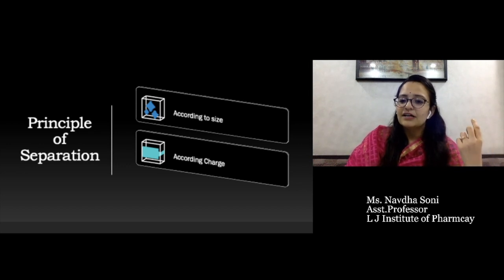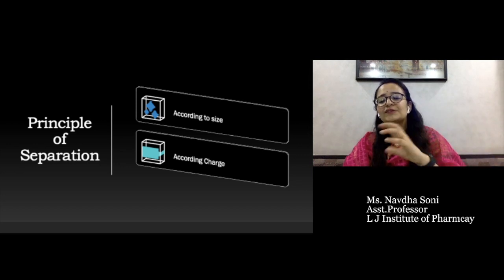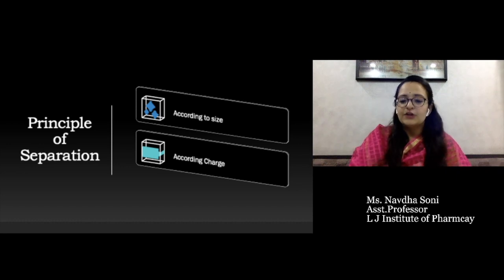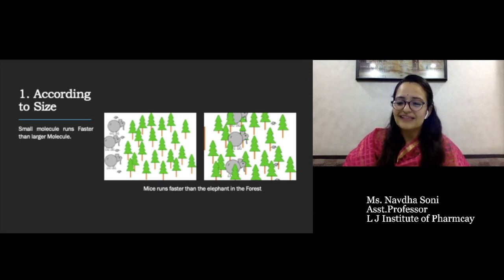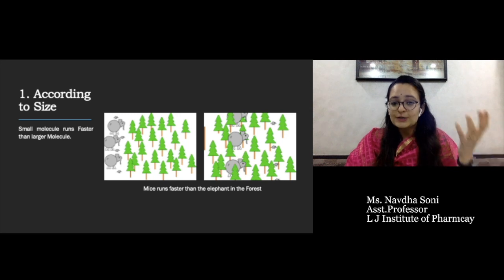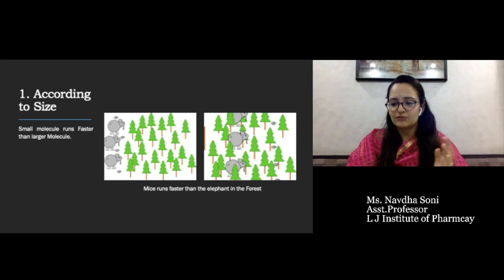Separation based on size means smaller molecules run faster than larger molecules. Let's take the example of mice and an elephant. Here you can see the example of mice and elephant in the forest — who will run faster? Obviously, mice run faster than the elephant due to their size. So smaller molecules run faster than larger molecules. According to size, small and large molecules will be separated — smaller molecules separate first and then larger molecules separate after.